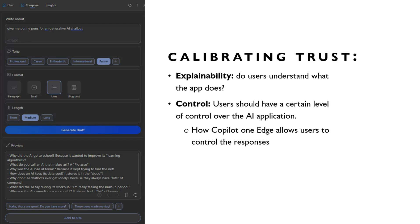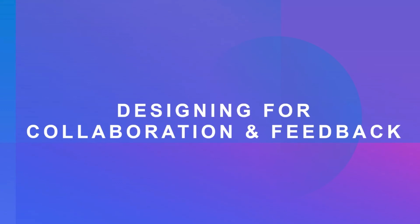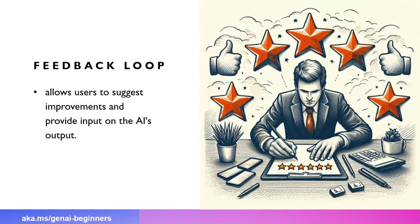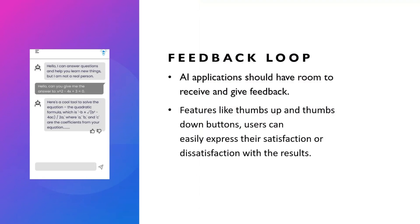Now, beyond trust, how do you give feedback when an error occurs? You need to design for collaboration and feedback. A feedback loop allows users to suggest improvements on AI output — for example, a thumbs up or thumbs down. If a user gives a thumbs down, you can follow up by asking 'Where was it bad?' These features allow users to collaborate with and give feedback on the application.